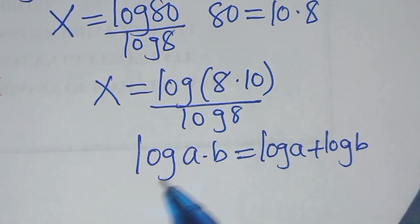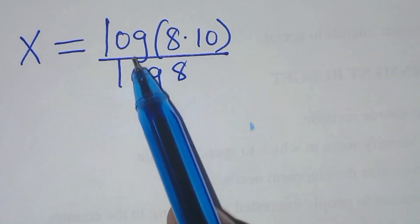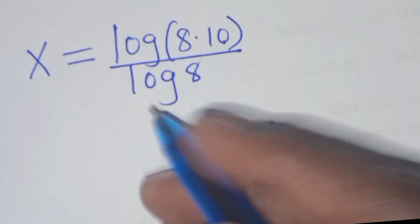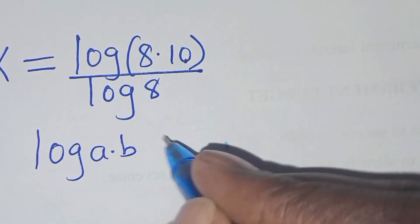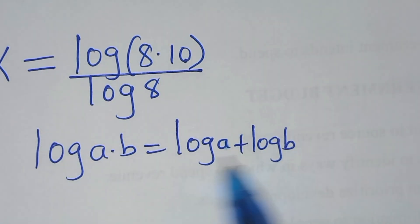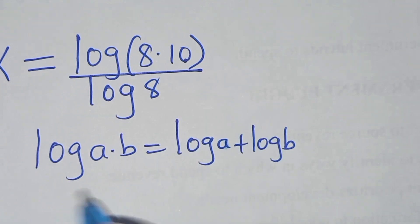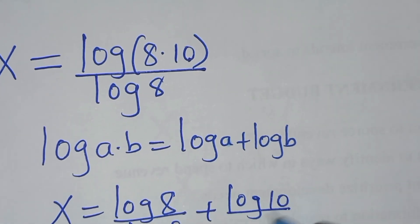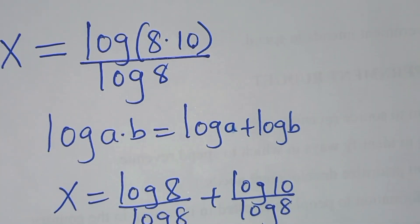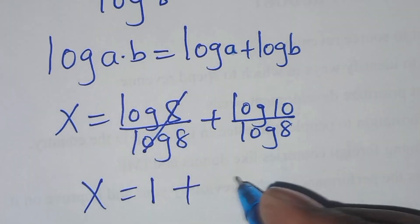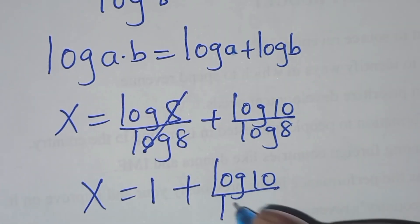Applying this logarithm property, we can transform x as equal to log 8 divided by log 8, plus log 10 divided by log 8. Simplifying, log 8 over log 8 equals 1, so x is equal to 1 plus log 10 divided by log 8.